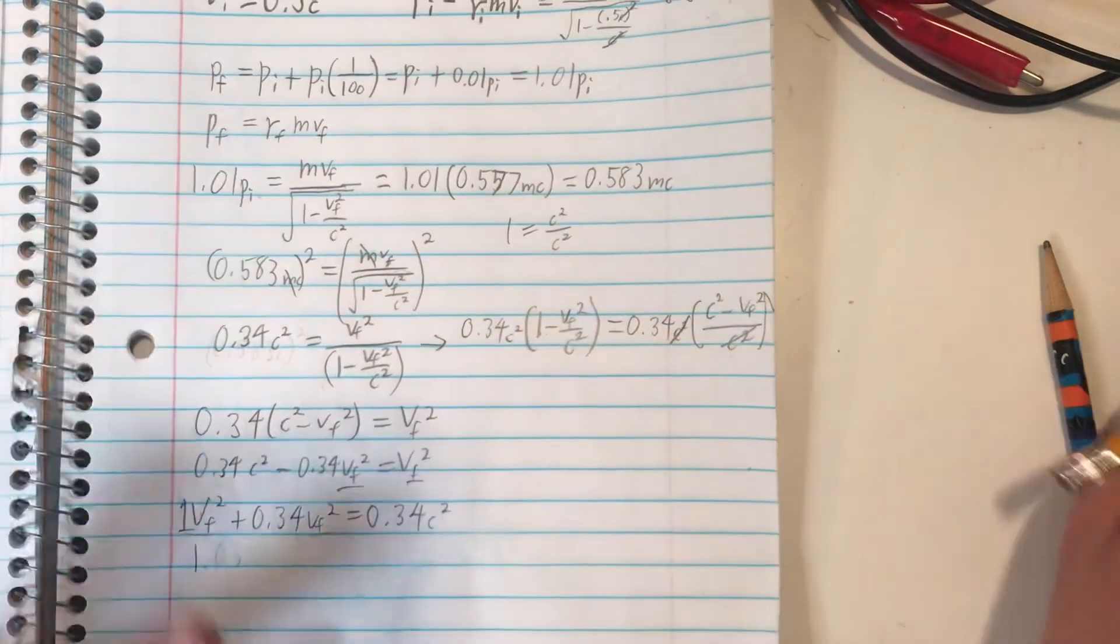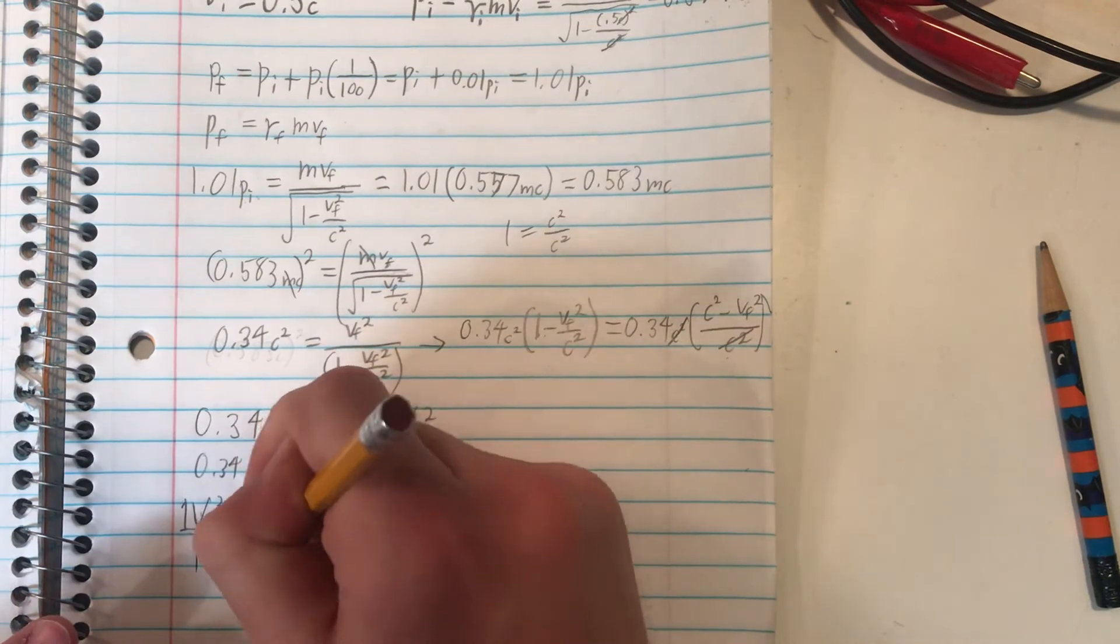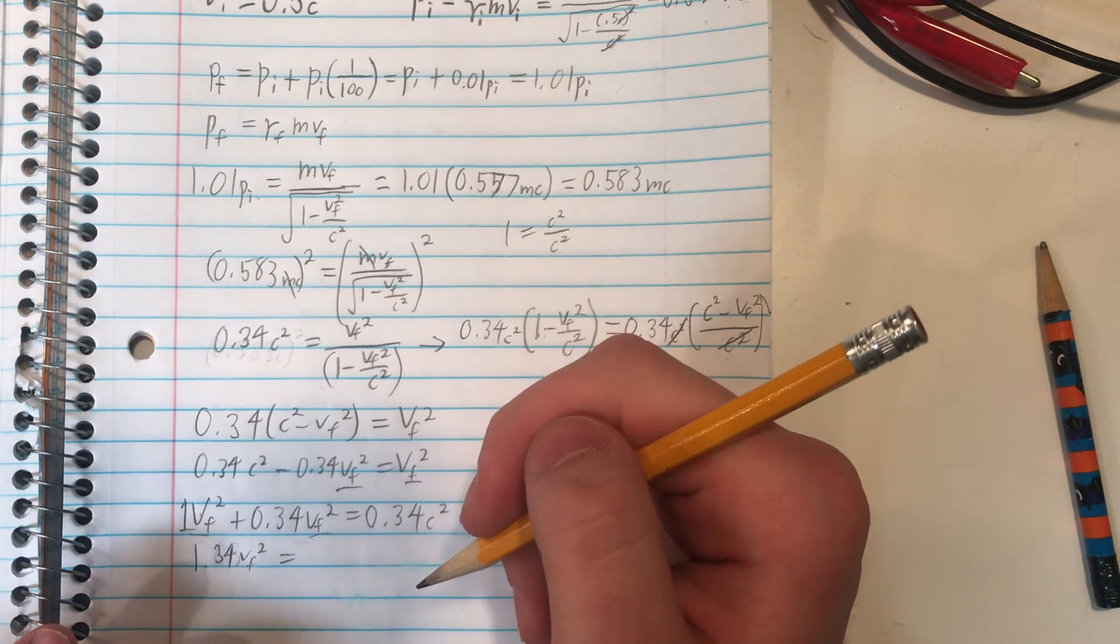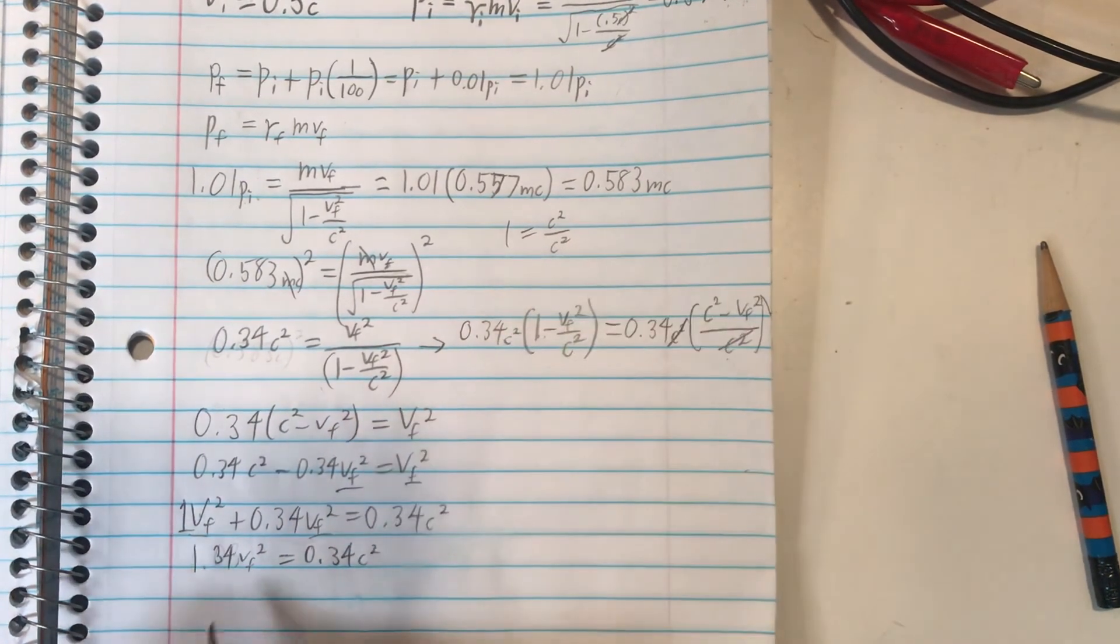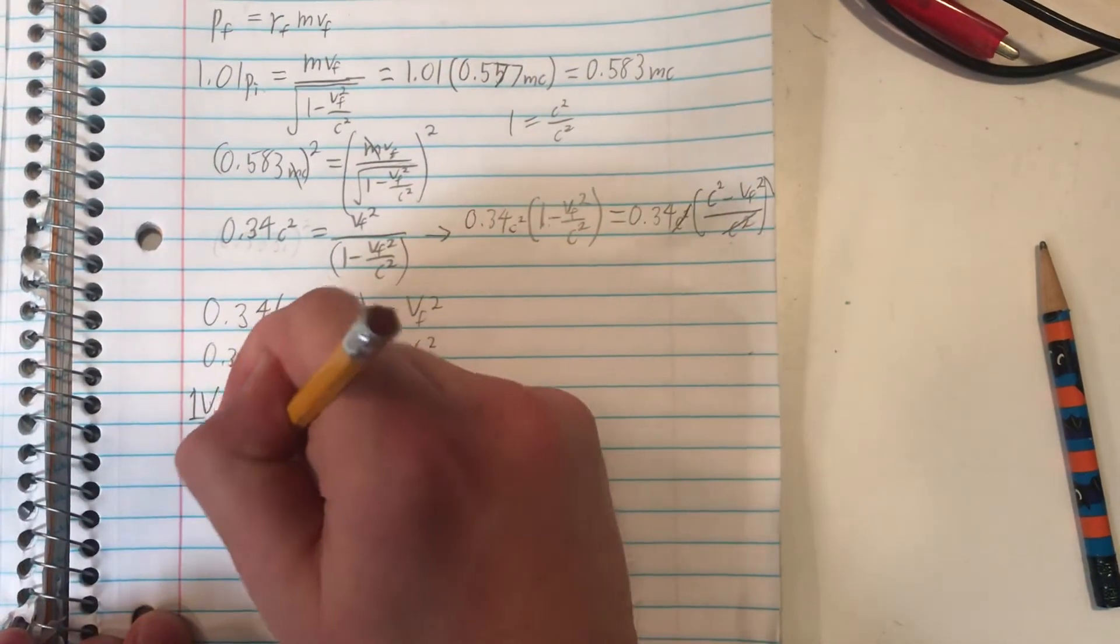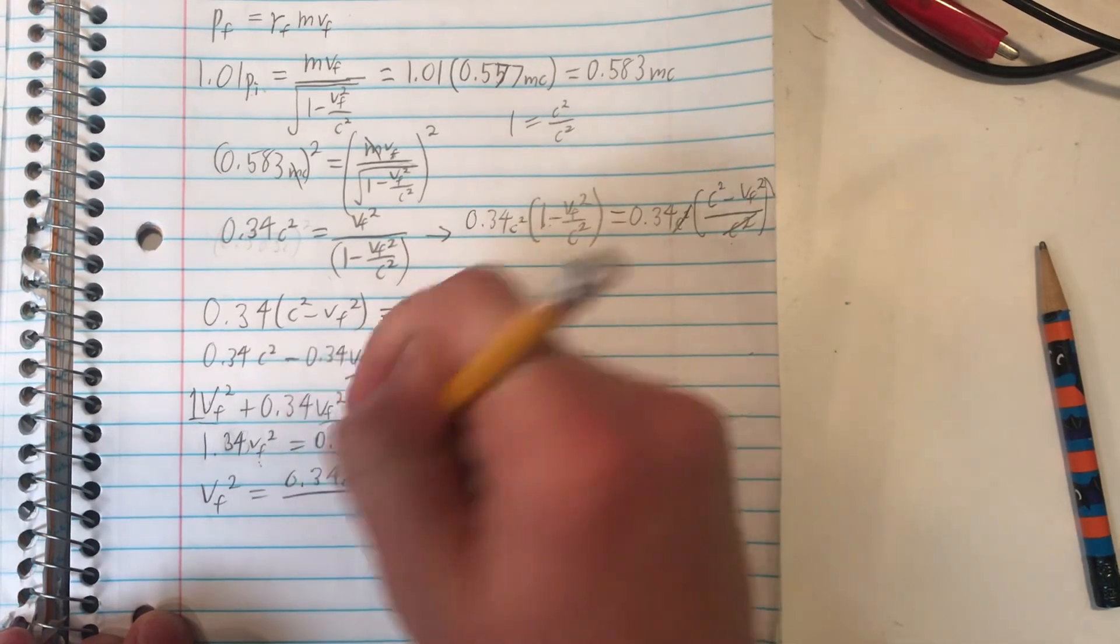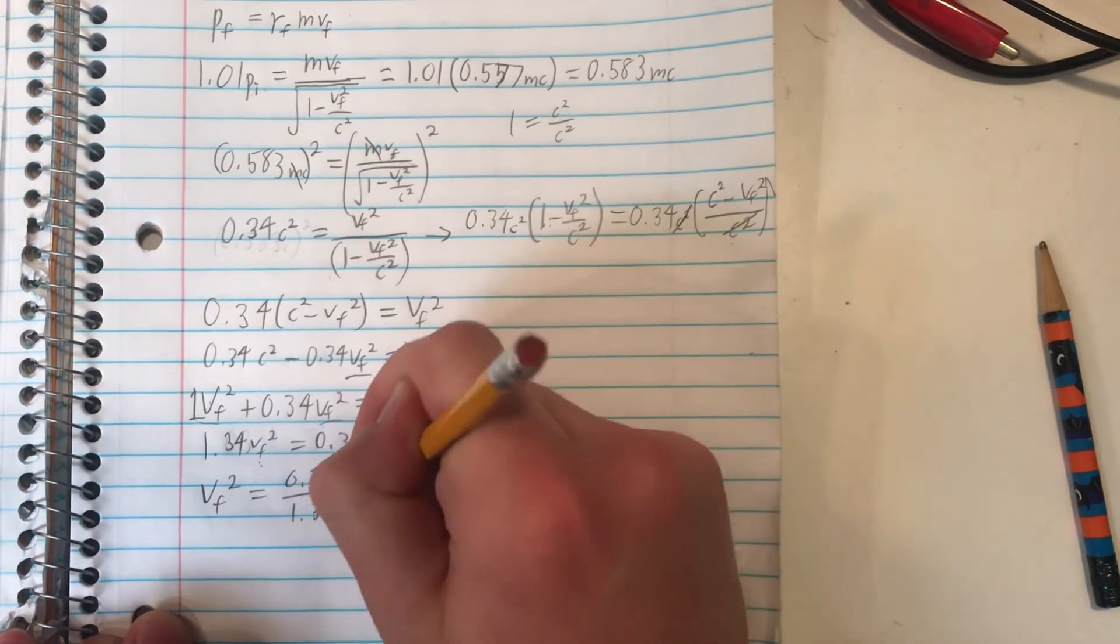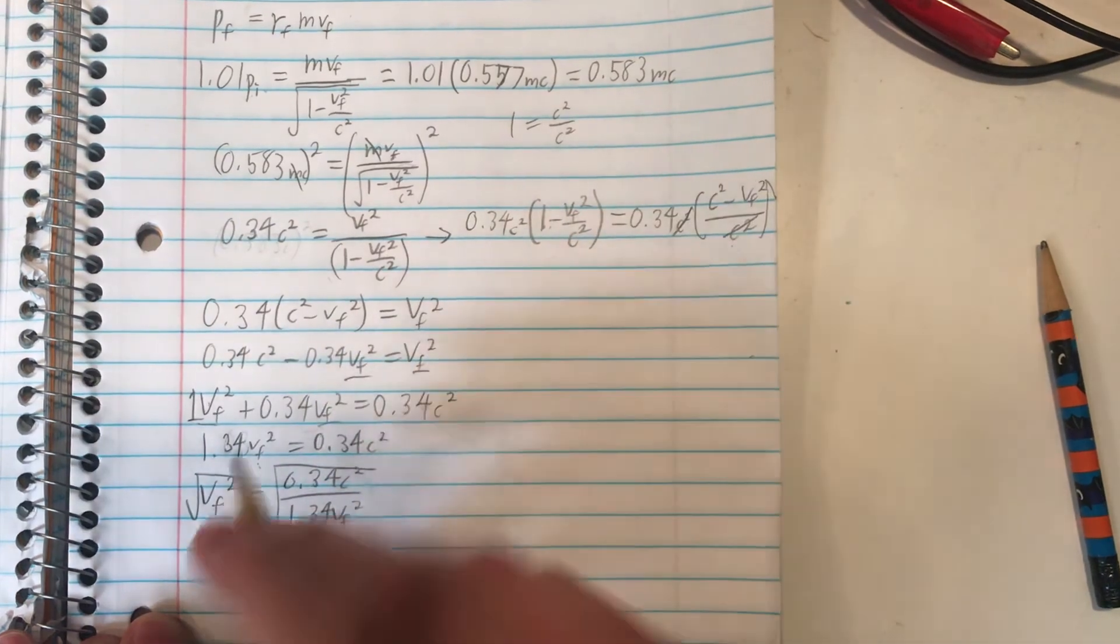Is equal to 0.34 c squared here on the right. So now we can isolate the vf squared on the left there, as vf squared equals 0.34 c squared divided by 1.34, and then find the square root of both sides.